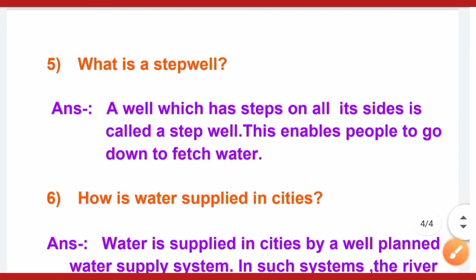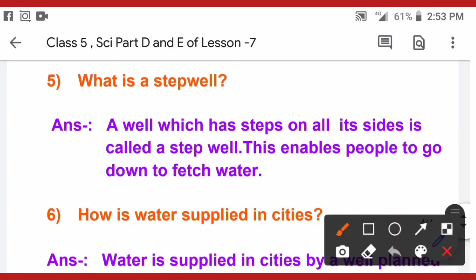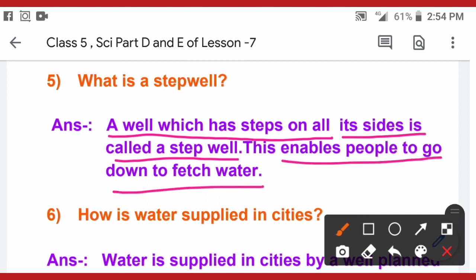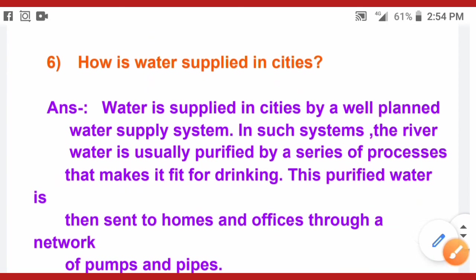Question number 5: what is a step well? A step well is a well which has steps on all its sides. It is where four walls are present and we go down from the stairs to fetch water. This enables people to go down the stairs and bring the water up.